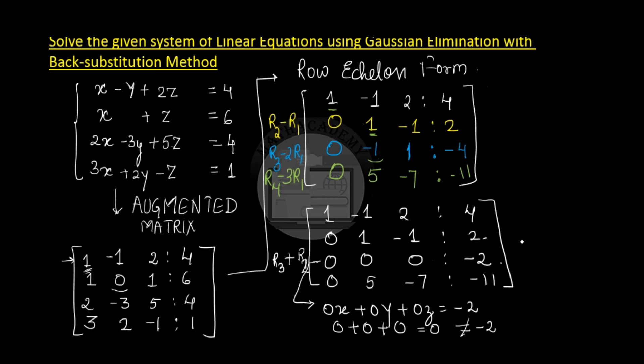Correct. So this means that there are no values of x, y, and z such that 0x plus 0y plus 0z becomes minus 2. And hence, this system of linear equations has no solution.